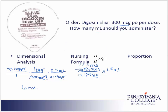Now when I look at my labels, the desired and the have have the same label, so I can cancel that label and I'm ready to do the math. I'll take 0.3 divided by 0.125 and multiply by 2.5. That gives me an answer of 6 milliliters.